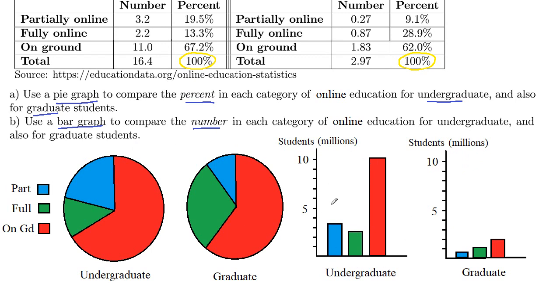And in fact, when your percentages overlap or they don't add up to 100%, a bar graph is often going to be your best solution — because in a pie graph everything has to add up to 100%.